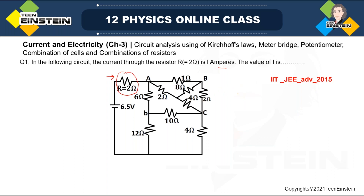At balanced condition, these are four arms. You can see this is the galvanometer part. We have a Wheatstone bridge here.